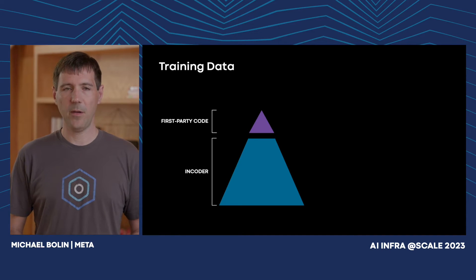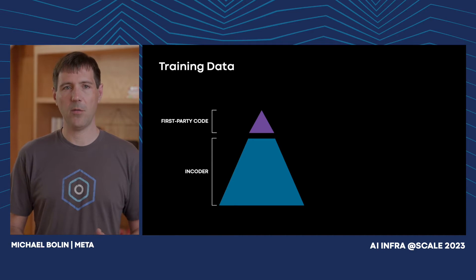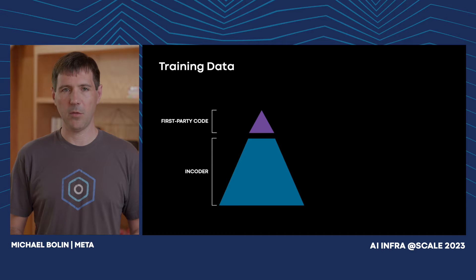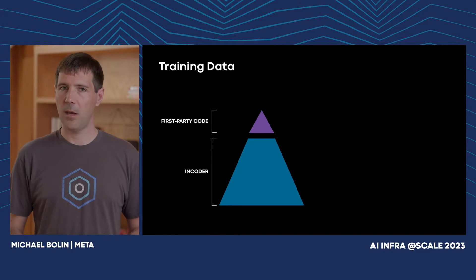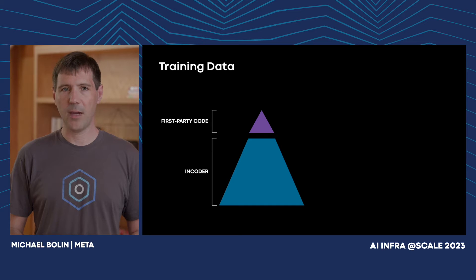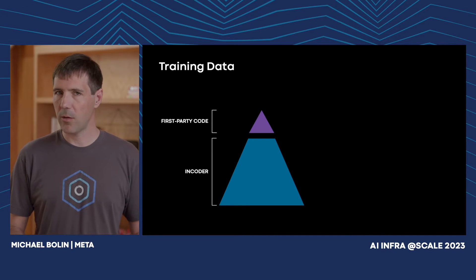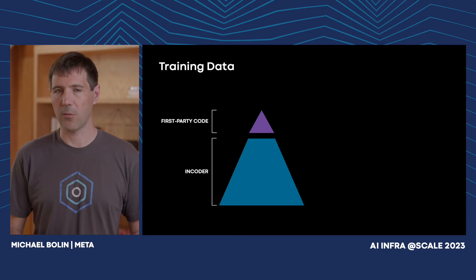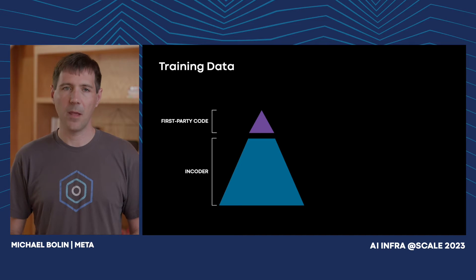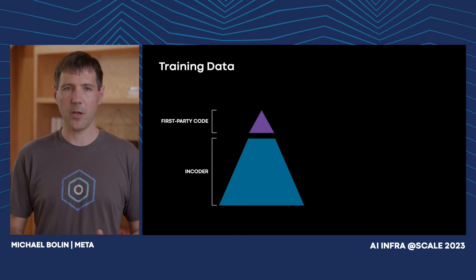For starters, we fine-tuned the model on first-party code, exposing it to our internal libraries and frameworks so Code Compose can incorporate them into its code suggestions. In particular, at Meta, we are heavy users of Hack and Flow, which are programming languages that were not well represented when the original Encoder model was trained. Fine-tuning on our first-party code helps close that gap.